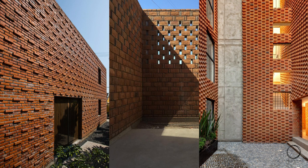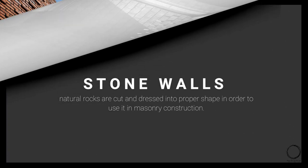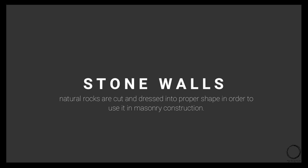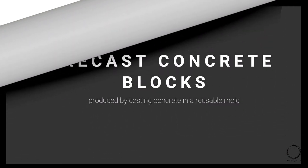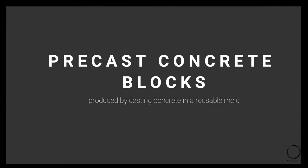These structures are exposed brick structures which can be constructed using many different bonds. Another type of masonry is stone wall, where natural rocks are cut and dressed into proper shape for masonry construction. It has two types: random rubble, where stones are put at random and built, and coarse rubble, where stones are placed in order of layers.